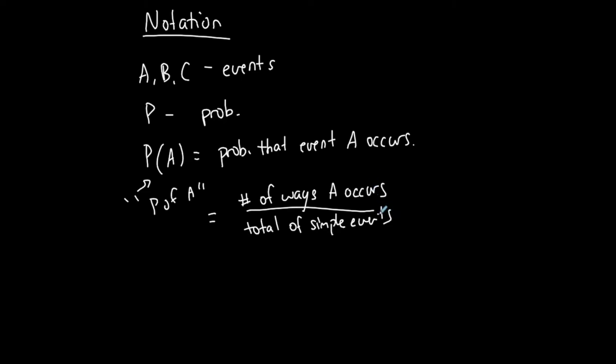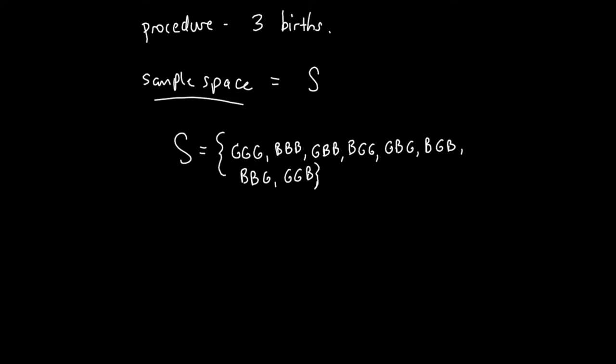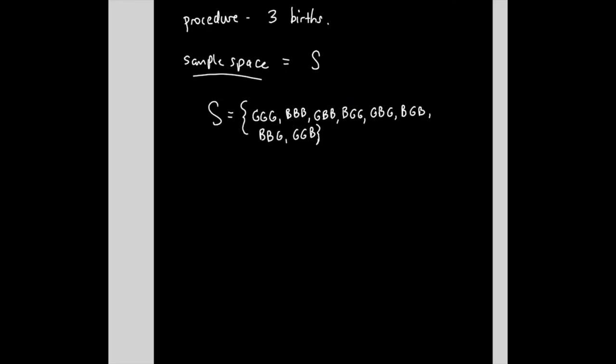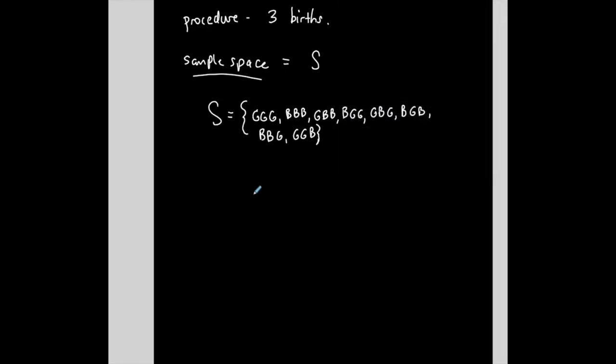So does that make sense? So let's say that I, let's go back here from this sample space using this example. Three births. These are all the outcomes. I'm not always going to list all the outcomes. We're going to calculate probability in other ways also.